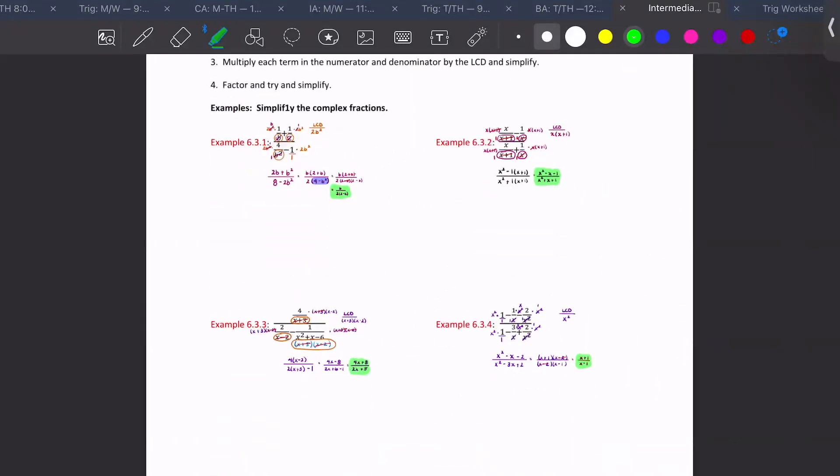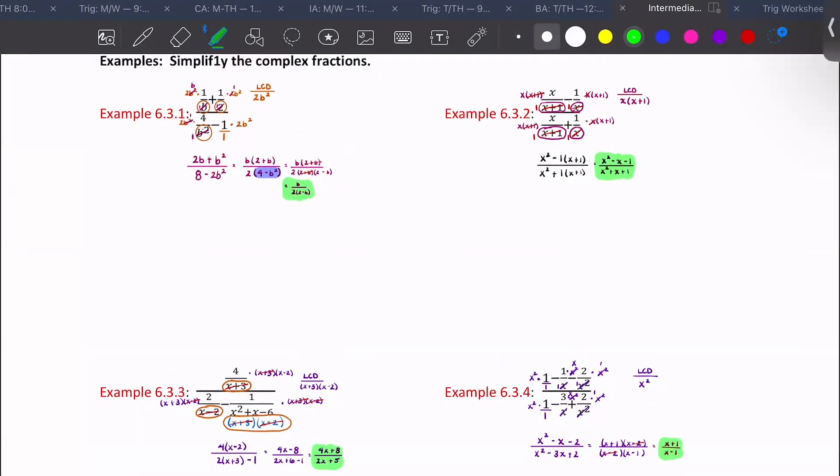So complex fractions. What we need to know is that we multiply by the least common denominator. That gets rid of our fraction in the numerator and our fraction in the denominator. So we just have a regular fraction or a regular rational expression. And then we just try to factor it if we can. If we can't, we get to quit early.